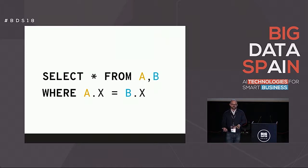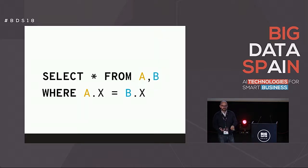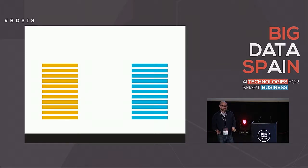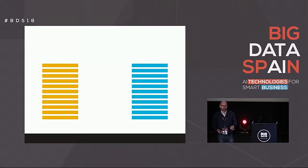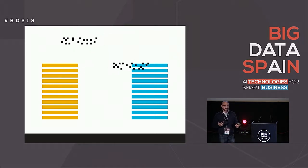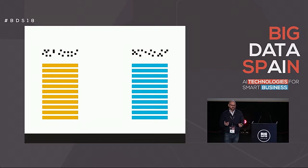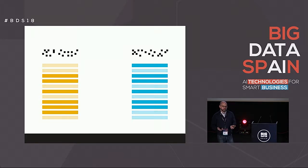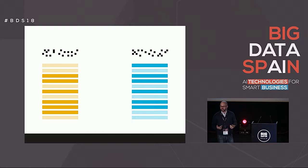Another application is the Bloom join. In a distributed database where you have two tables on separate machines, doing a join could be really expensive — you'd have to do a lot of communication to send values back and forth. With a Bloom join, if you construct a Bloom filter for the values of the join attribute in each relation, instead of sending all actual values across the network, you send the much more compact Bloom filters. This tells you right away which rows are not going to be implicated in the join at all and can be safely ignored.